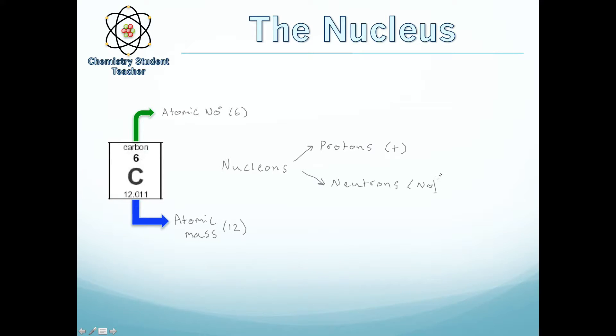So how do we know how many protons and neutrons an atom has? If we look at the atomic number, which in this case carbon is 6, that actually relates to the number of protons. So in this case, carbon has 6 protons.